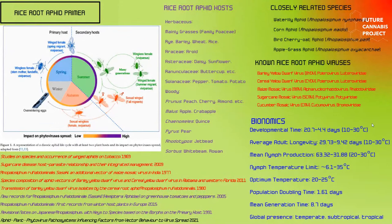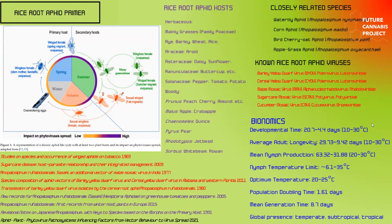Rice root aphids have a two-way life cycle: herbaceous hosts in spring and summer, and woodier plants — like cannabis — in autumn and winter. They originated in eastern Asia, possibly Japan or the eastern Eurasian coast. In their native range they lay eggs, but in western regions like North America and Europe, they frequently skip egg production and reproduce continuously. If you're looking for rice root aphid eggs in a North American cannabis grow, you may not find any.